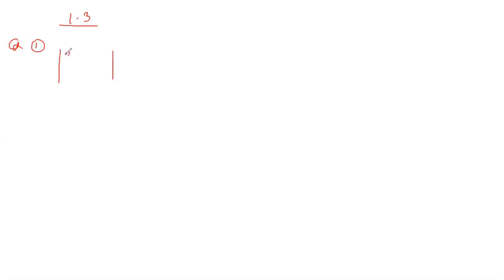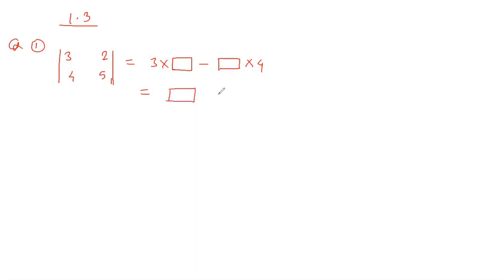It contains the determinant of 3, 2, 4, 5. We are going to complete the blanks: 3 multiply by box minus box multiply by 4, then there is again box minus 8. While solving the determinant, we are going to cross multiply: 3 multiply by 5 minus 4 multiply by 2.